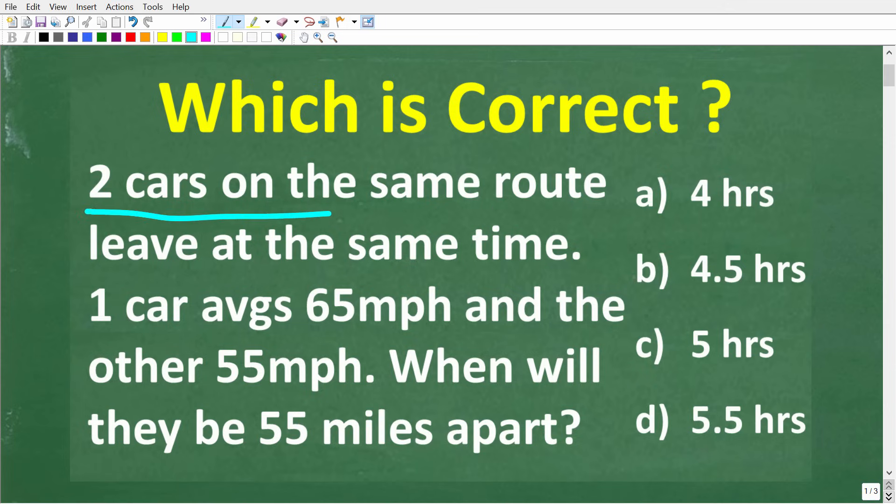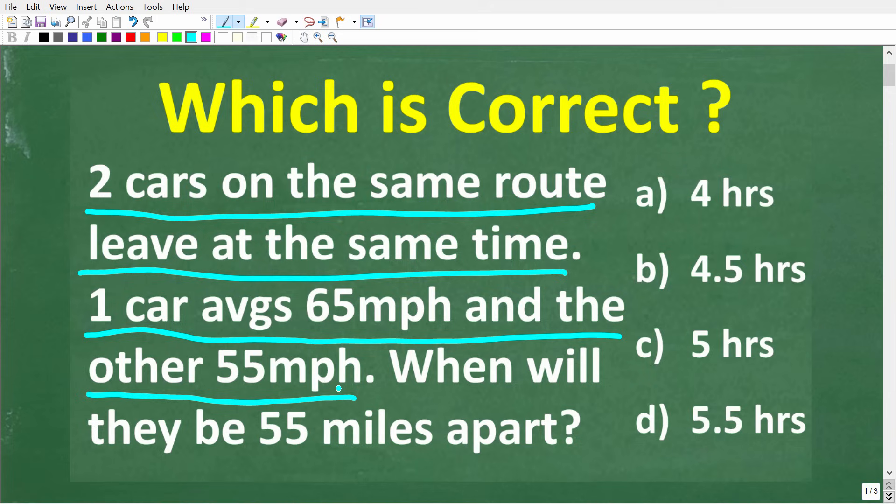So two cars on the same route leave at the same time from the same place. One car averages 65 miles per hour and the other 55 miles per hour. When will they be 55 miles apart?